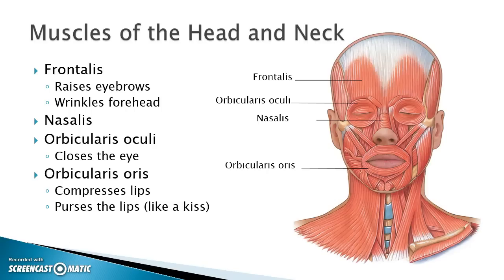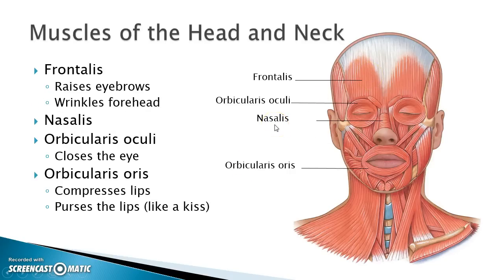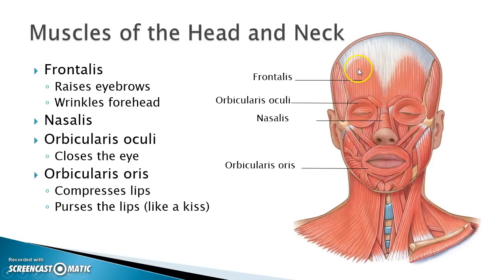The frontalis is really making up the forehead here, covering the frontal bone. Its function is to wrinkle the forehead, so when you contract it or lift your eyebrows, it causes the wrinkling of the forehead.